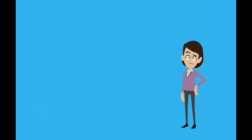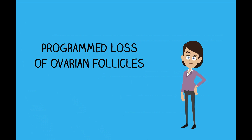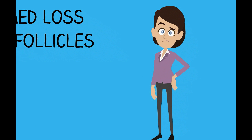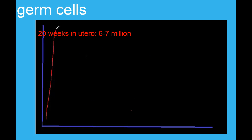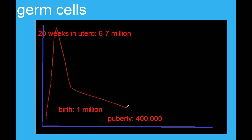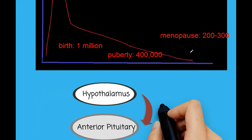Why do women go through menopause? Menopause occurs due to the programmed loss of ovarian follicles. The number of germ cells, or oocytes, peaks when a woman is 20 weeks in utero at 6 to 7 million. By the time she is born, she has 1 million. At puberty, she has 400,000. At the time of menopause, she has 200 to 300 remaining.